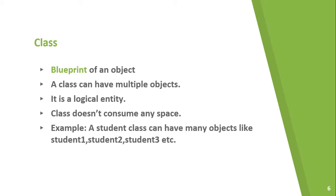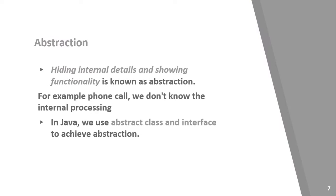Here is a student class with Student 1, Student 2, and Student 3 objects. Now we talk about abstraction.